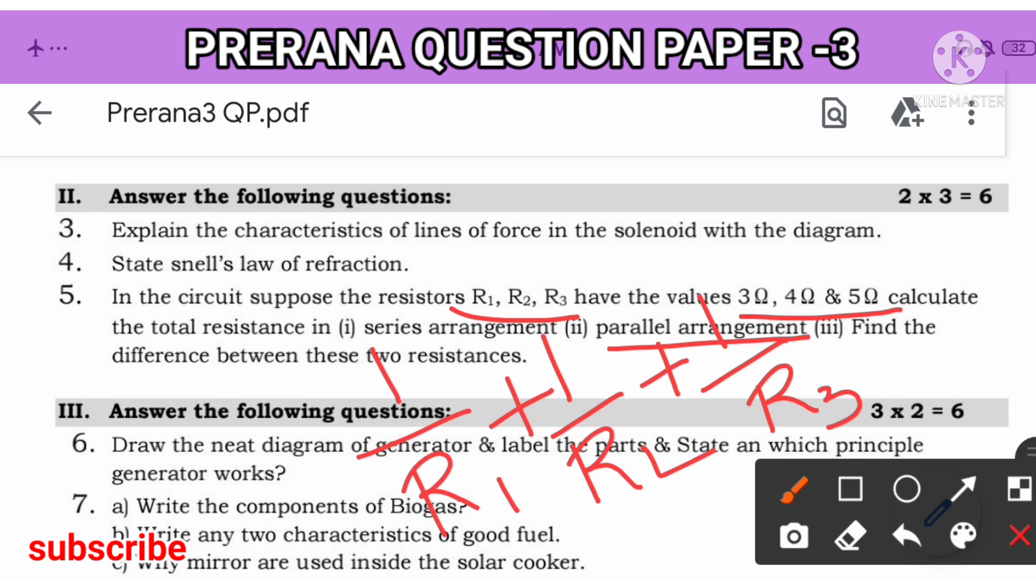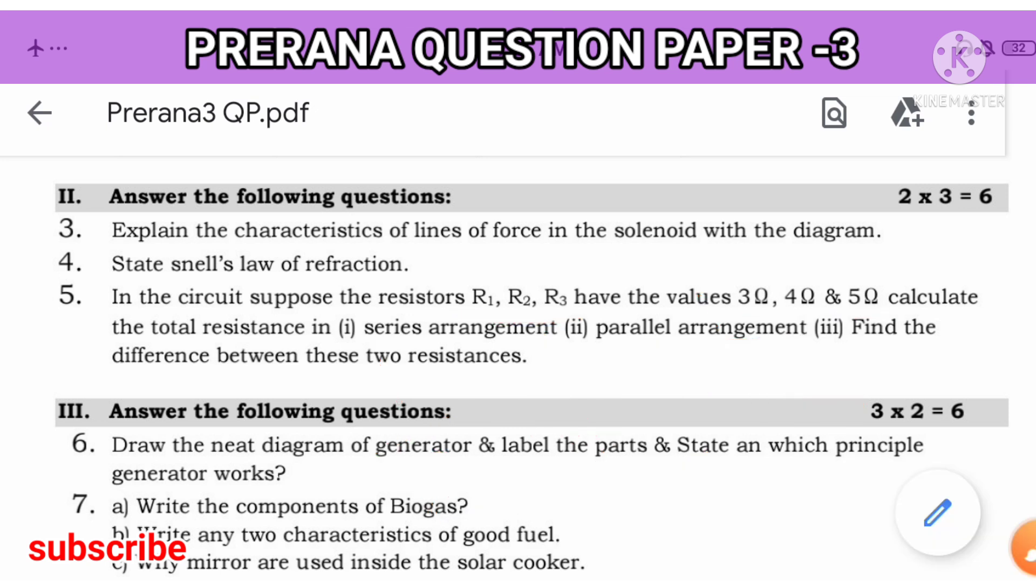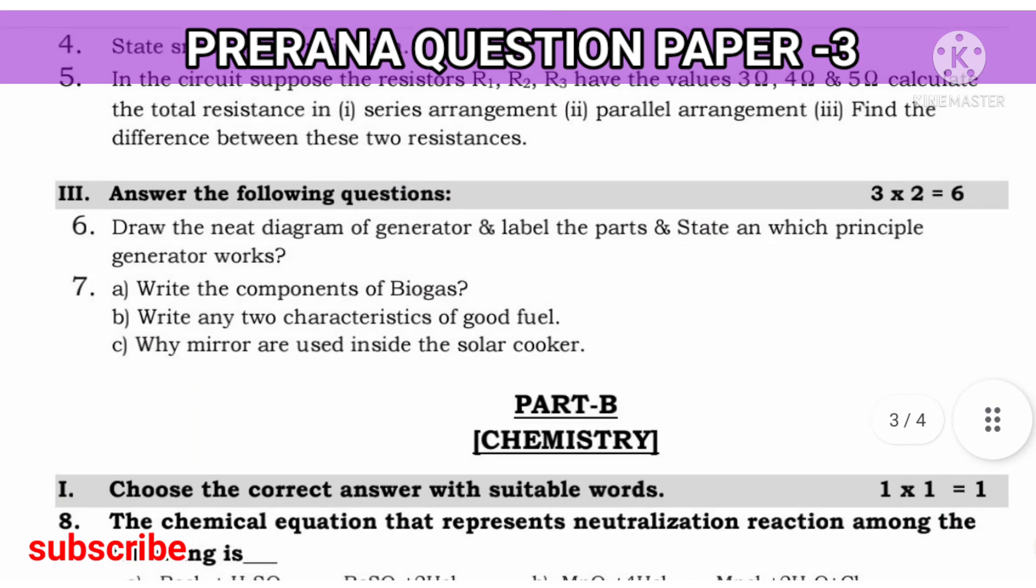Next, you have to write the difference. I have already told the difference between series and parallel. This is all for two marks. You have to solve this. Next, draw the neat diagram of generator. Label the parts, state on which principle the generator works.